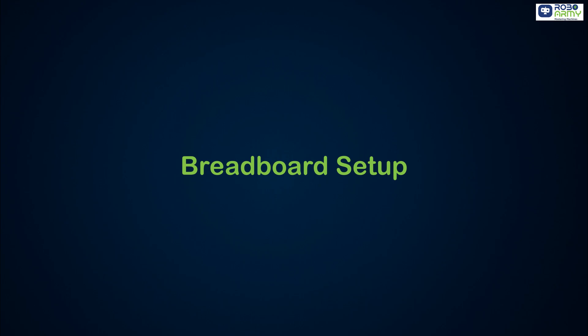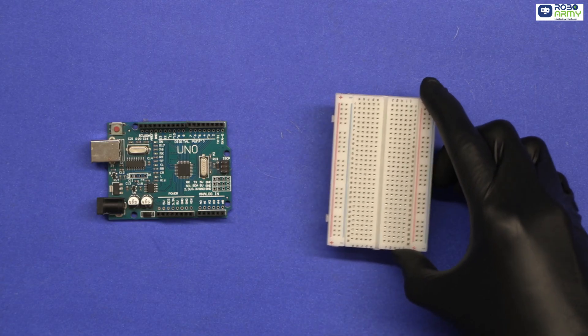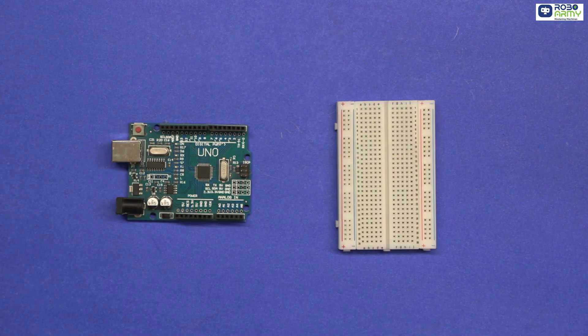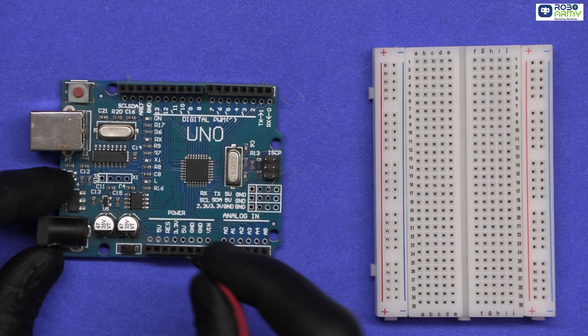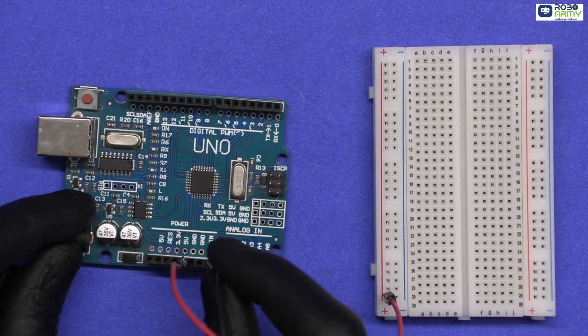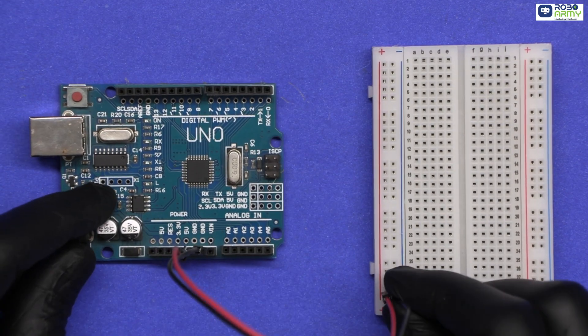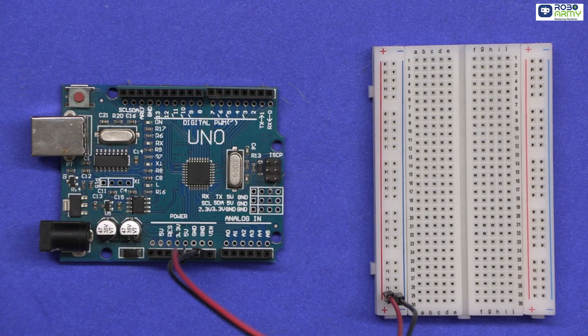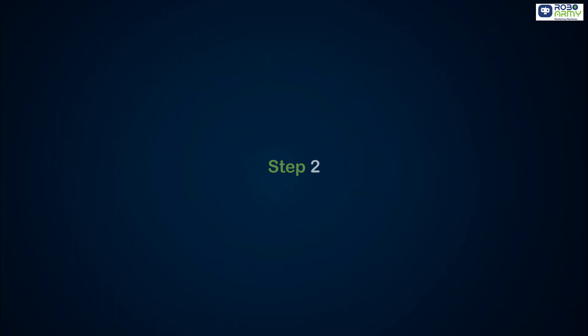Step 1: Breadboard Setup. Place the Arduino Uno and small breadboard side-by-side. We will use the breadboard to connect power and signal lines easily. Connect the 5-volt pin from Arduino to the plus red rail of the breadboard. Connect GND from Arduino to the blue rail of the breadboard. Now all components can take power from these rails.